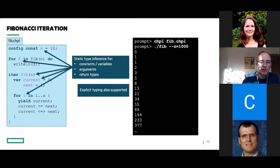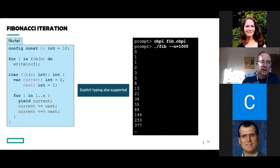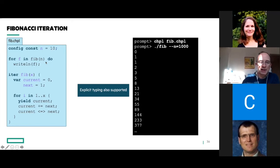There are definitely times when being able to declare types is good — for documentation purposes, for library interfaces. So explicit typing is also supported in Chapel. We use the colon syntax to specify a type constraint or for type casts. I could rewrite this code with explicit type annotations, basically decorating everything as int. In my slides I'll typically stick to implicit typing because it's shorter and less cluttered and shows off the language a bit better. But it's important to know explicit typing is there as well for cases that want or need it.